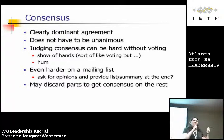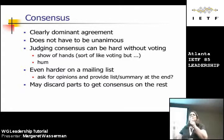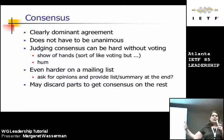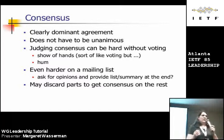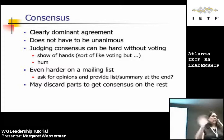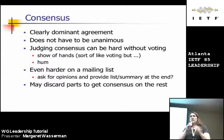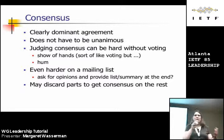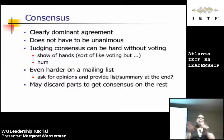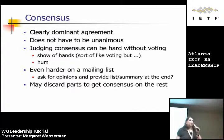At times you have to discard parts of something to get consensus on the rest. In IPv6 years ago, we had an addressing architecture document where there was dissent on the site local addressing type. We eventually reached rough consensus in the working group to move that stuff out of the document so we could move the other stuff forward that all our work was blocking on. That was a very tricky thing to do, but as a working group chair you can provide guidance to say: what if we move this out of here and focus on the parts we all agree on? It's one of the techniques you can use to try to reach consensus.